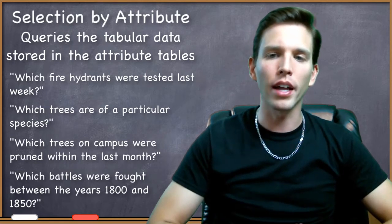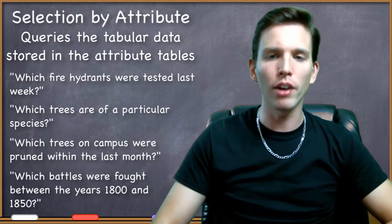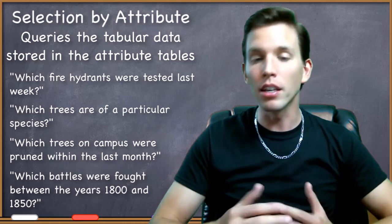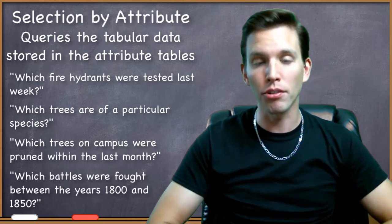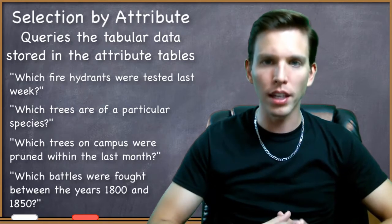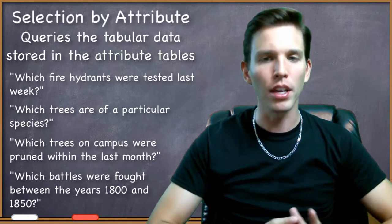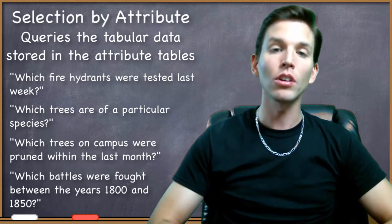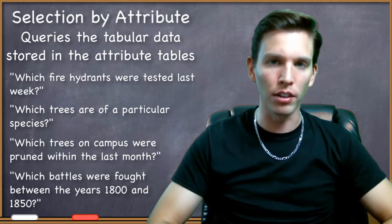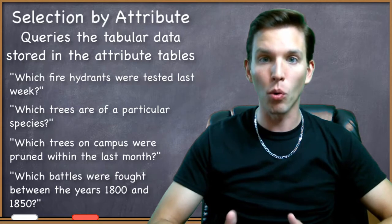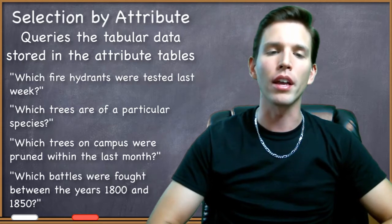If I were able to query all of the attribute tables for all the trees that are of a certain species, then I could instantly look at their geometry to see the geographic distribution of the trees with that particular characteristic. What's really important to realize here is the types of questions that can be answered by using a query on the attribute table.